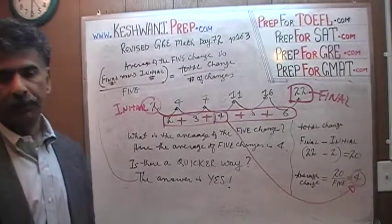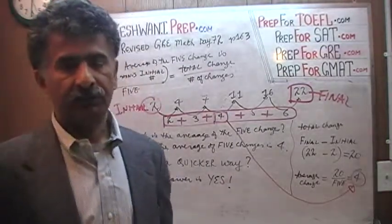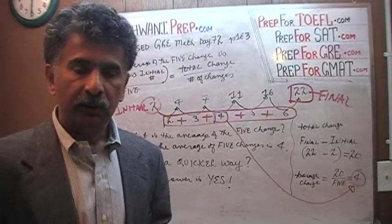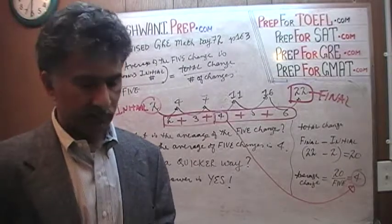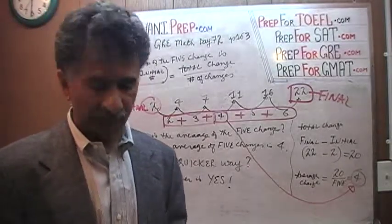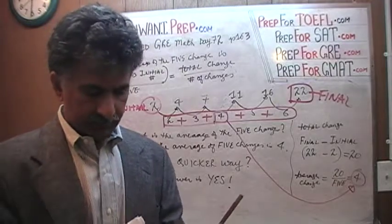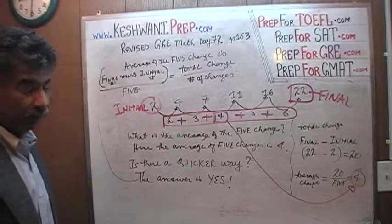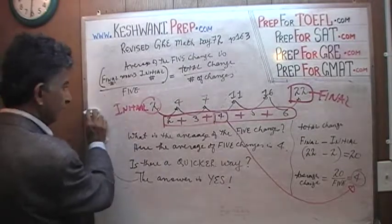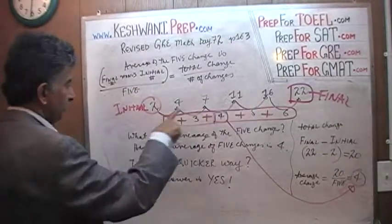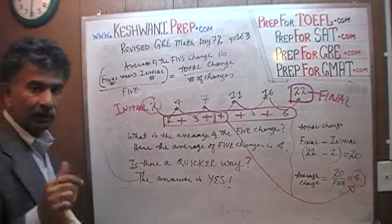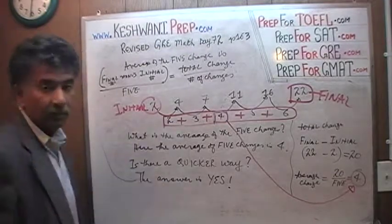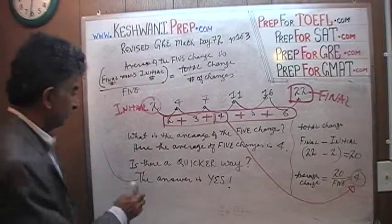That's what we're going to do with the GRE problem, because there are 10 observations. If you were to sit in the exam and do every one individually, it will be aggravating, annoying, time-consuming, laborious, and tedious. So: take your final observation, subtract the initial observation — that represents the total change. Divide by the number of changes. There were five changes in this case, so you divide by five and get your average change.